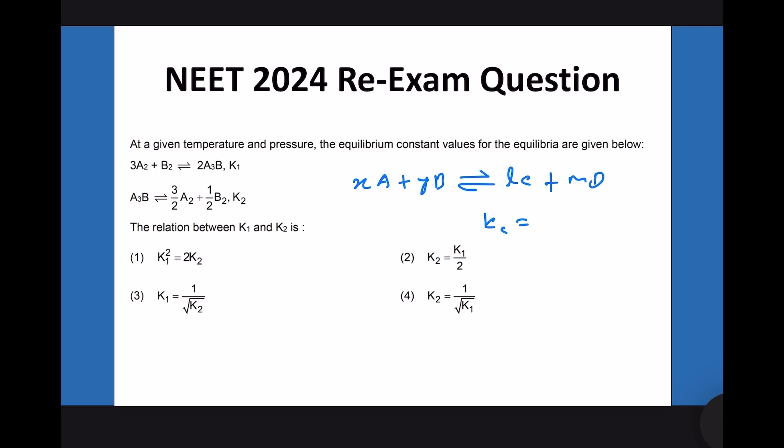Equilibrium constant Kc will be the concentration of c to the power l, concentration of d to the power m, divided by concentration of a to the power x, concentration of b to the power y. So that is the equilibrium constant, and the same logic we need to use.